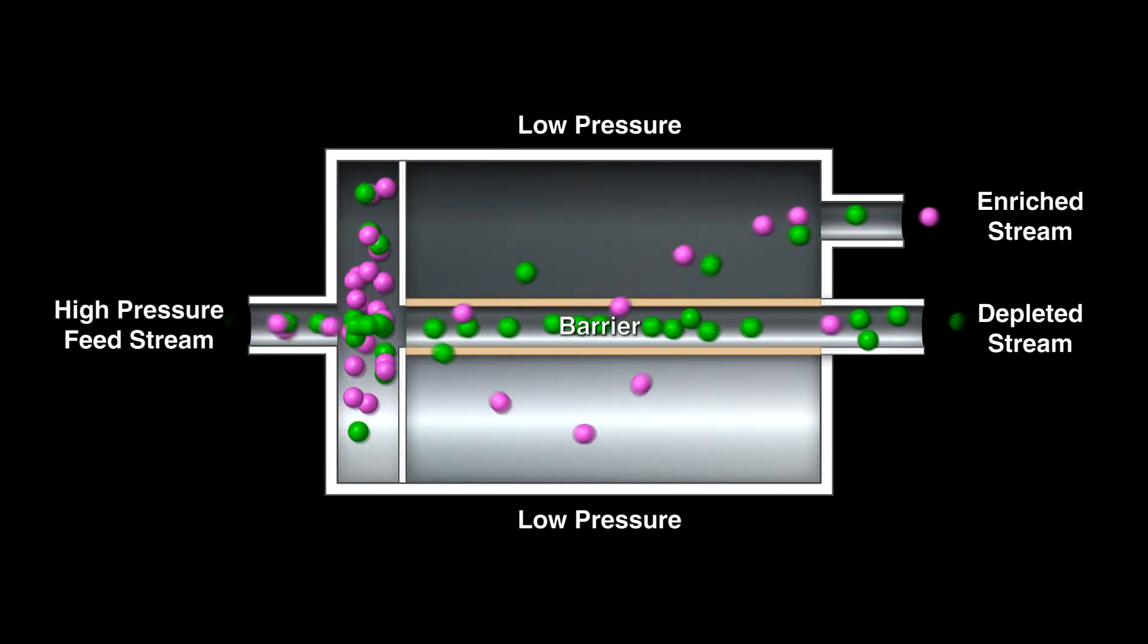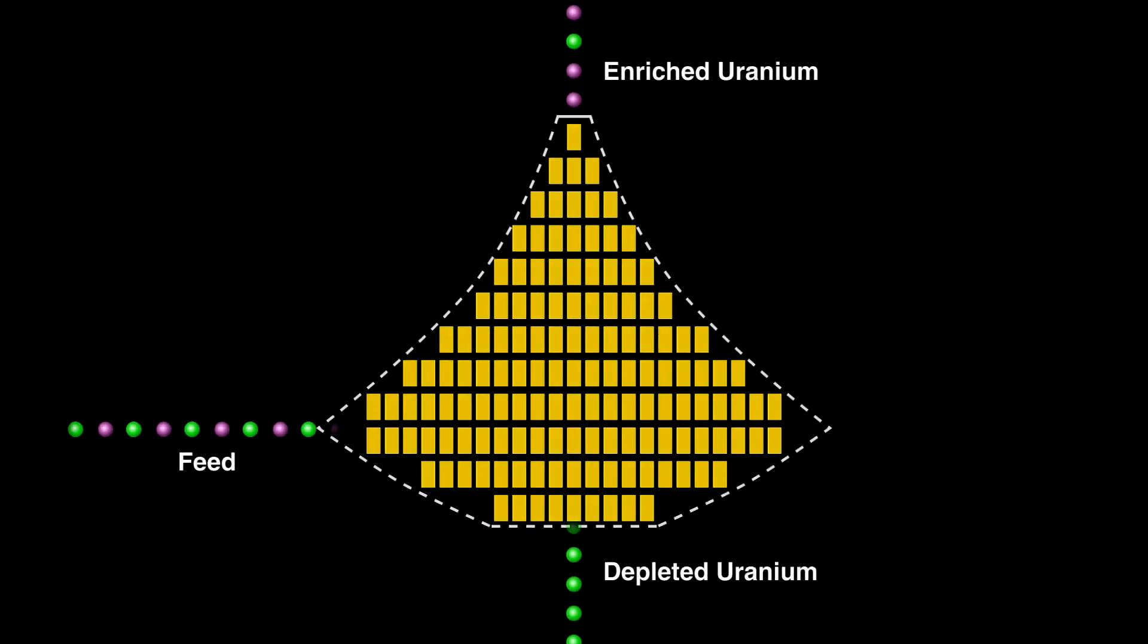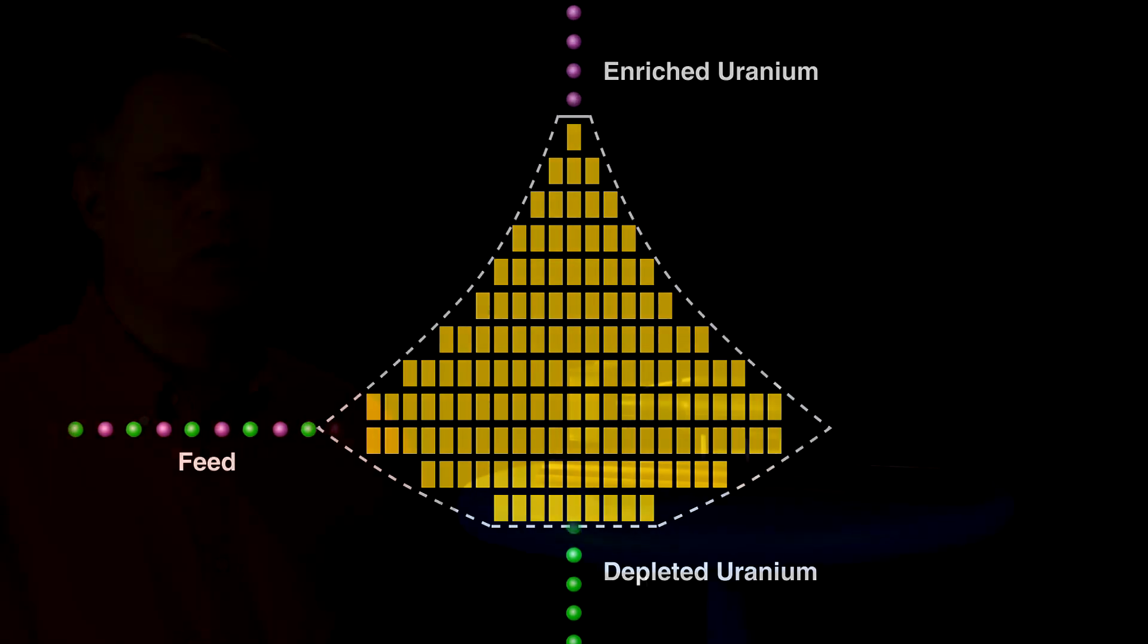To increase the separation, the slightly enriched stream in the chamber has passed through many more stages like this. To enrich 3% U-235 to 90% takes nearly 4,000 stages.